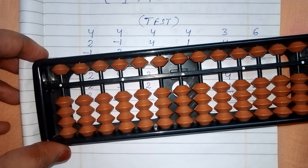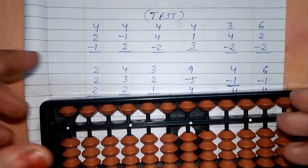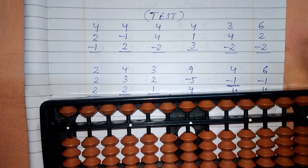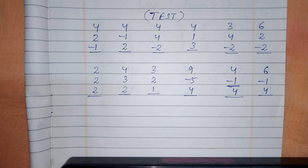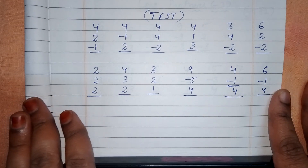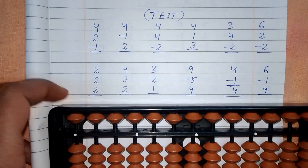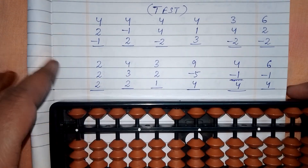First I will do the questions in front of you. After this video, take a screenshot of the questions and do them yourself. While doing the questions, speak out the words — for example, say 'partner of four is one,' 'partner of three is two,' and so on. By using those sentences while solving, it will be useful for you. Let's start the questions.